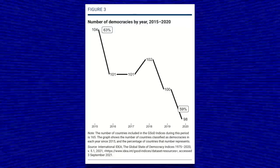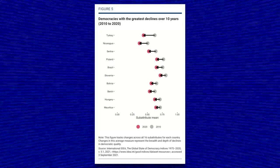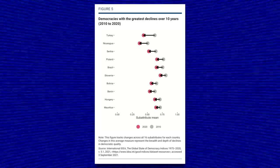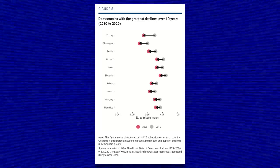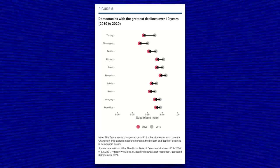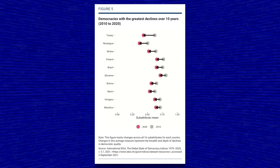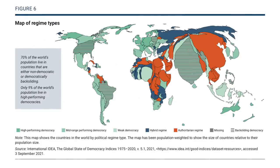The overall number of democracies has decreased globally. Democracies that saw the biggest decline between 2010 and 2020 include Turkey, Brazil, and others. Bolivia is also on this list, but at the time the report was made Bolivia was still under control of far-right autocrats, whereas they've since moved back towards democracy. Looking at the overall map of regime types, the United States is now considered a backsliding democracy.